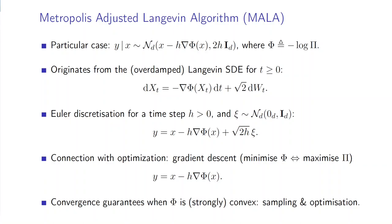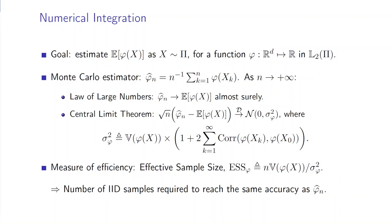Further connections between sampling and optimization can be observed when looking at convergence guarantees, since exponential convergence can be obtained for both algorithms whenever Φ is convex. Quantitative rates can even be obtained when Φ is strongly convex.